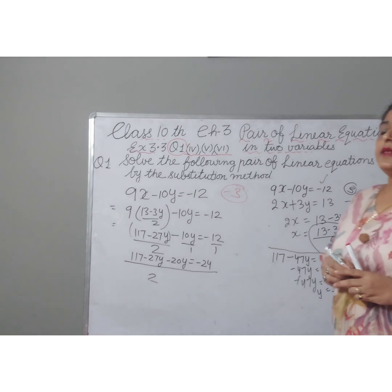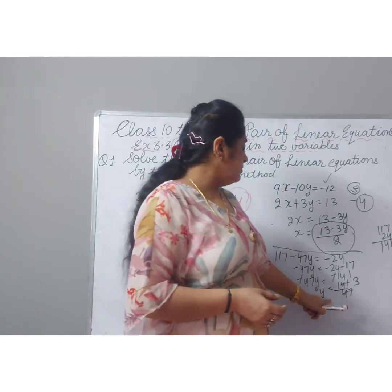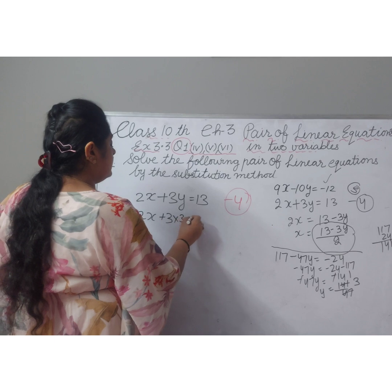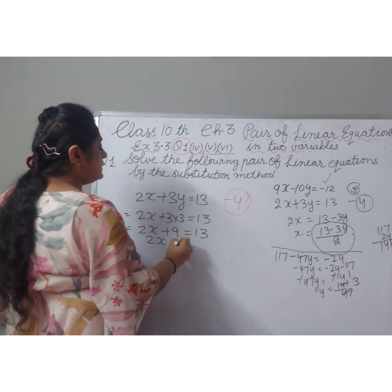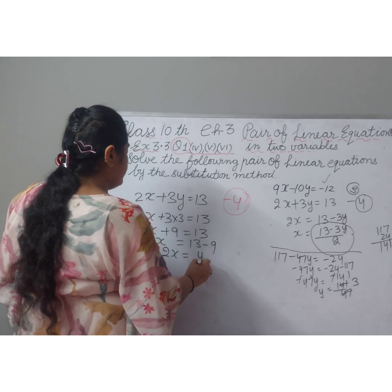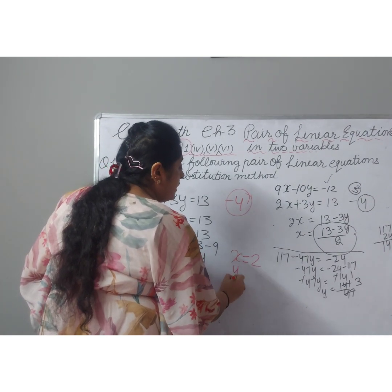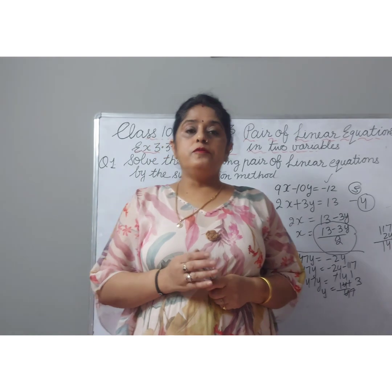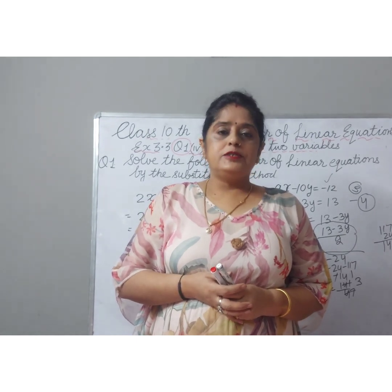Now we put y equal to 3 into equation 4: 2x plus 3 times 3 equals 13, so 2x plus 9 equals 13, giving 2x equals 4, and x equals 2. The answer is x equal to 2 and y equal to 3. The first, second, and third parts are explained in the previous video. Hope you understood, and thanks for watching.